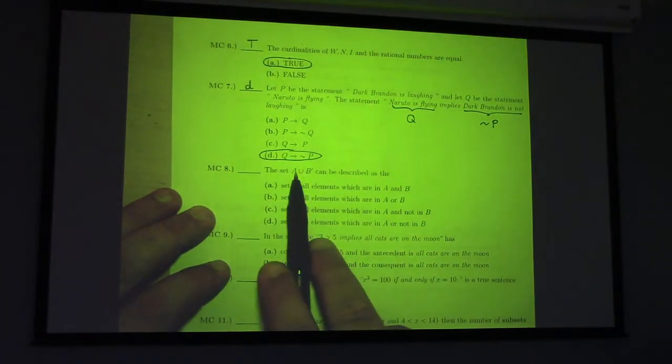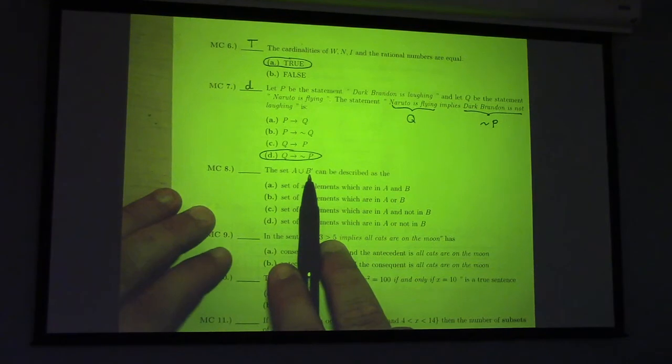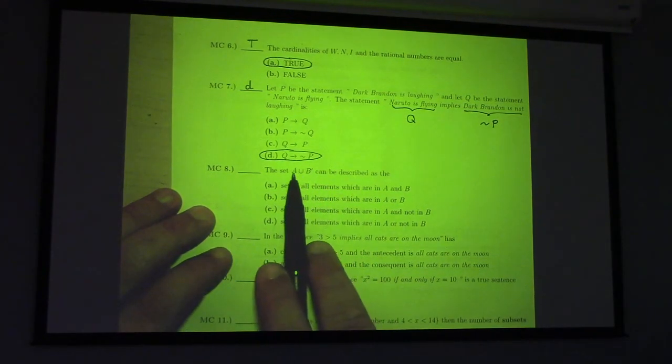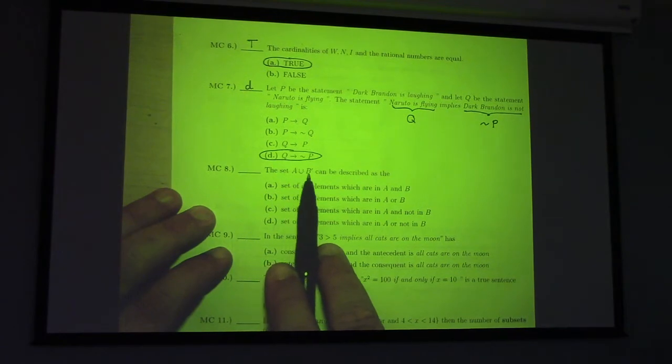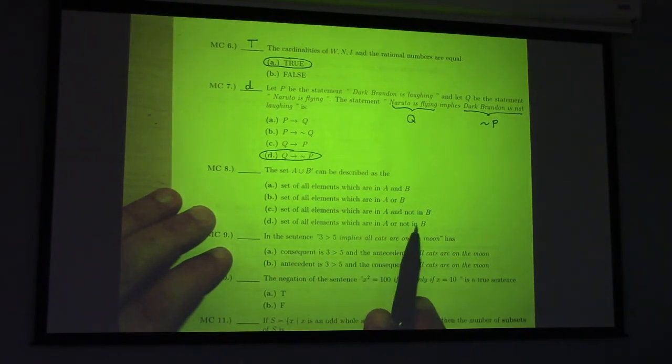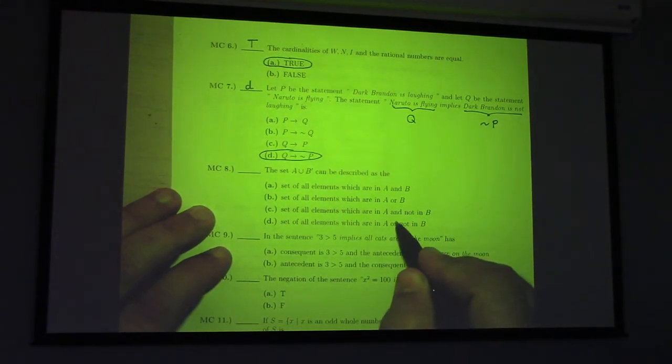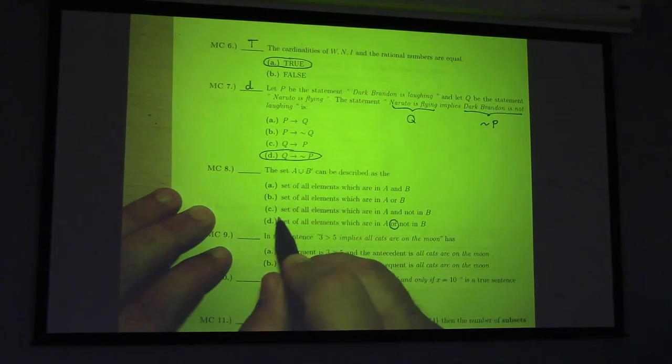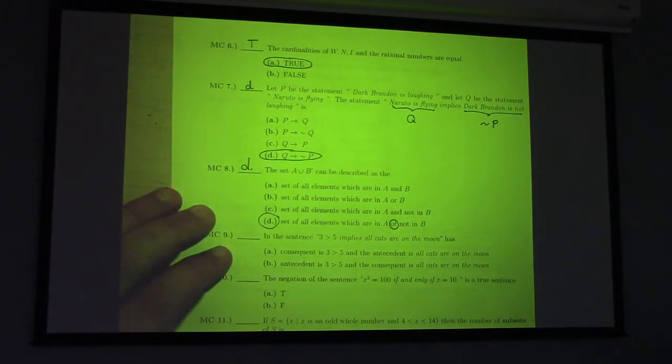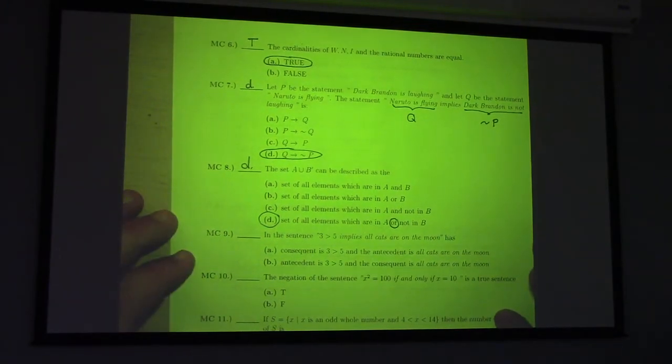A union B complement, that is the set of elements that are in A or not in B. The elements which are in A or not in B. So, notice that the or is important. That's what makes us choose D. I thought union was and or. No, union is or.